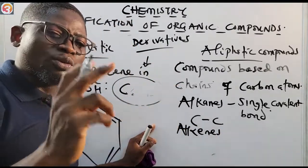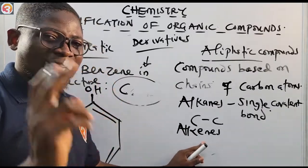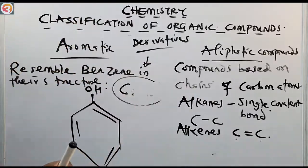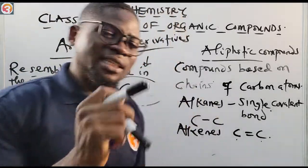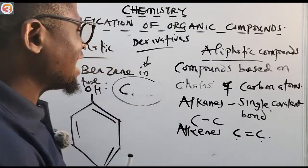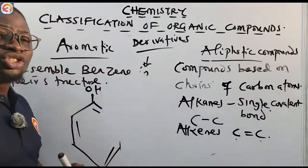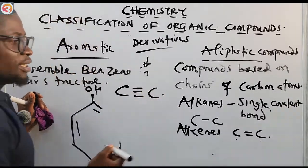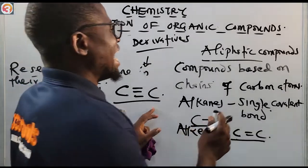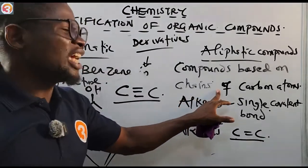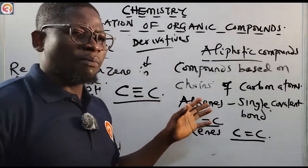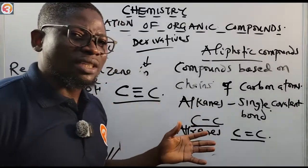Second, we have alkenes, which have at least one carbon-to-carbon double bond in their formula. Third, we have alkynes, which have carbon-to-carbon triple bonds. So: alkanes have single bonds, alkenes have double bonds, and alkynes have triple bonds — these are all aliphatic compounds based on chains of carbon atoms.